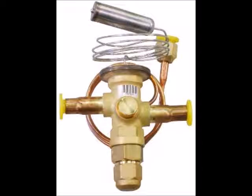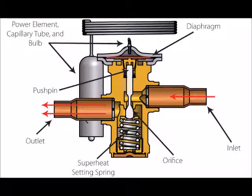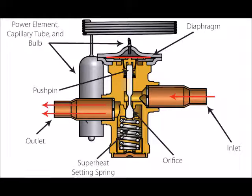The pressure spring can be adjusted to increase or decrease pressure based on temperature needs. The pressure created by the spring acts on the opening of the valve. When the pressure of the sensor bulb acting on the diaphragm is greater than the combined pressure of the evaporator and spring, the valve opens to increase the flow rate of the working fluid.